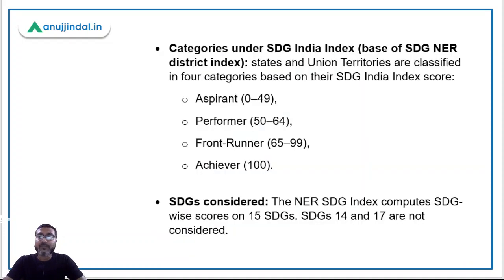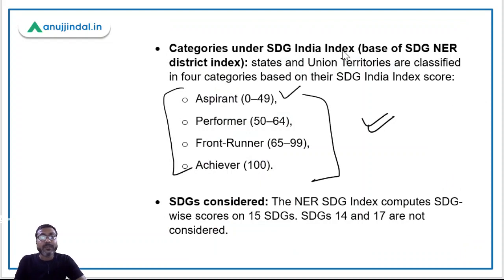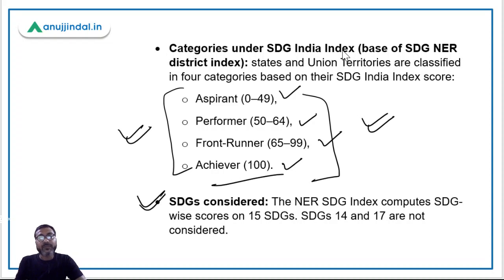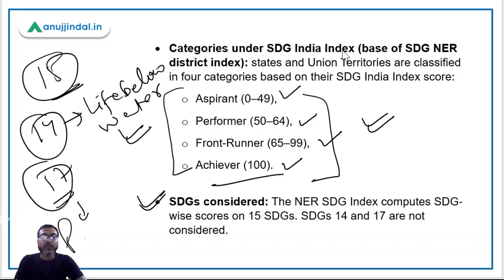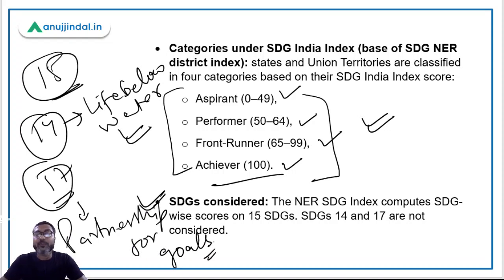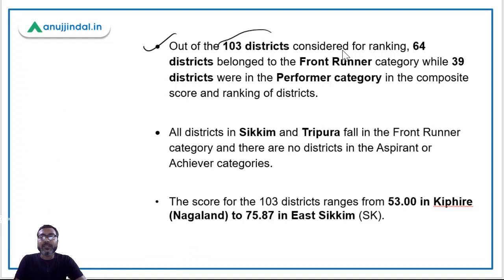The index ranks districts into four categories: Aspirant (score 0–49), Performer (50–64), Front Runner (65–99), and Achiever (100). These four categories are the same as in the NITI Aayog SDG India Index. While making this index, only 15 SDGs were considered. SDG 14 — Life Below Water — and SDG 17 — Partnership for Goals — were not taken into account.